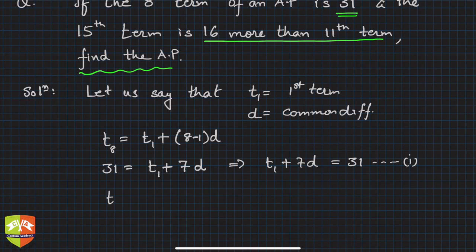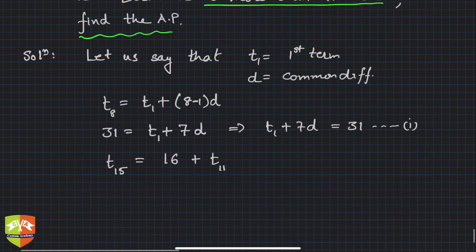This is what they are saying: t₁₁ + 16 = t₁₅. What is t₁₅? t₁₅ will be t₁ + (15-1)d, and t₁₁ is t₁ + (11-1)d. This is a new equation. If you see, this t₁ and this t₁ will disappear.